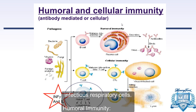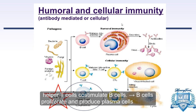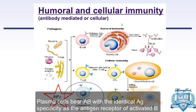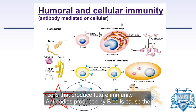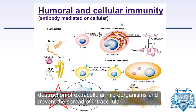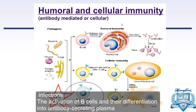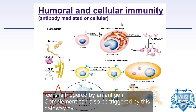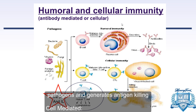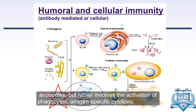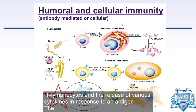Looking at a schematic of the immune system, there is humoral and cellular immunity. The basis for TB — both the reaction within the granuloma and within the diagnostic test — is really the T cell cellular immunity. It's the release of interferon-gamma that causes the reaction.